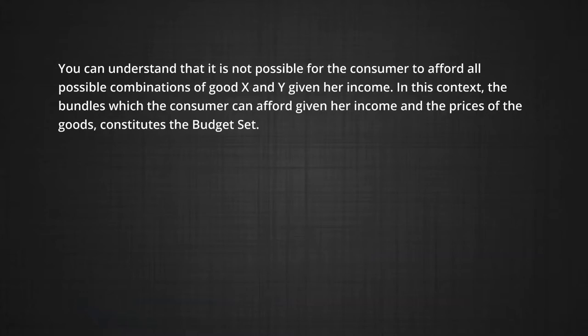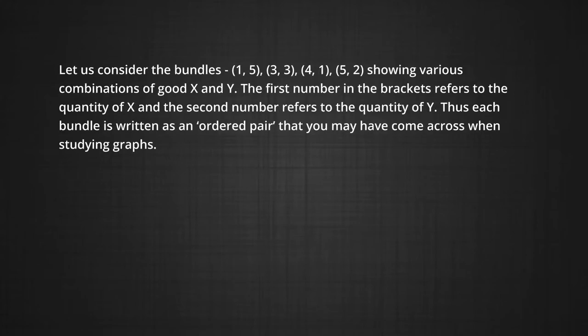The logic can be easily extended to discussion of many goods. Not all combinations of goods X and Y are affordable to a consumer given her income. The bundles which a consumer can afford, given her income and the prices of those goods, constitute the budget set. Let us consider the bundles (1,5), (3,3), (4,1), (5,2), which show various combinations of good X and good Y. The first number in brackets refers to the quantity of X and the second number refers to the quantity of Y. Thus, each bundle is written as an ordered pair.